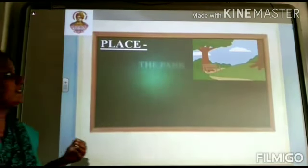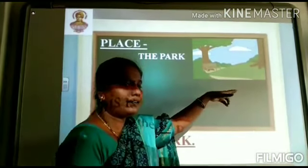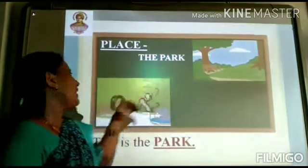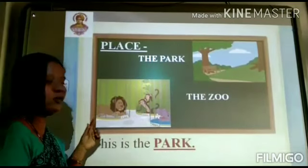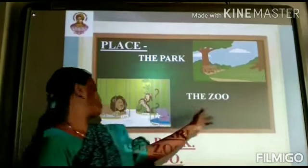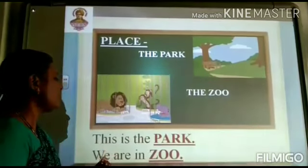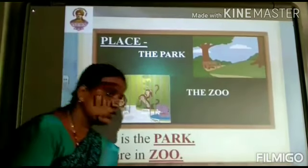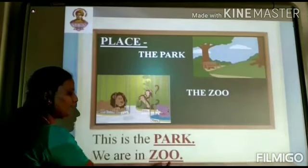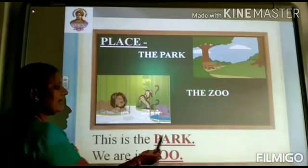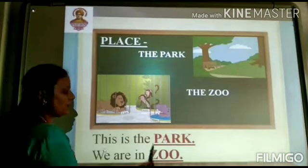Next we have place. What place is this? This is a park. You play in the park. This is a park. And we have all the animals here. What place is this? The zoo. We are in a zoo. Park and zoo are the places. That is called proper noun.